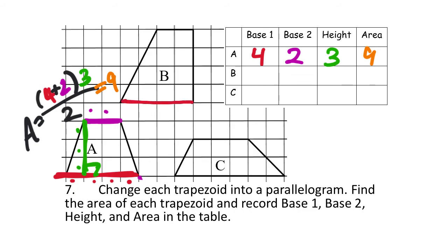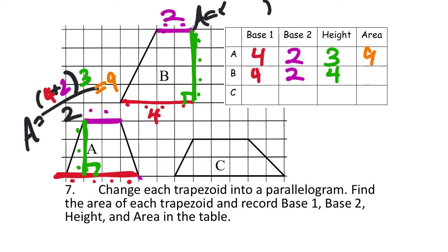Trapezoid B: base one is one, two, three, four units. Base two is two units. The height — this side creates a 90-degree angle, so I count one, two, three, four — four units. Area: add the two bases, four plus two is six, multiply by height four, that's 24, divided by two equals 12 square units.